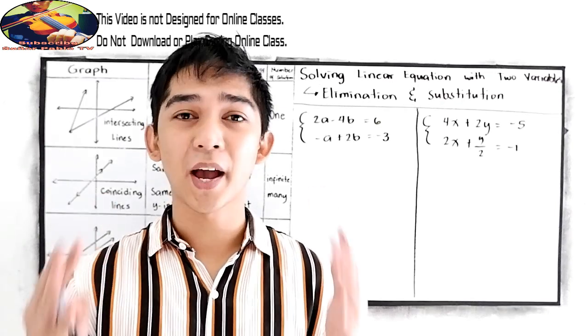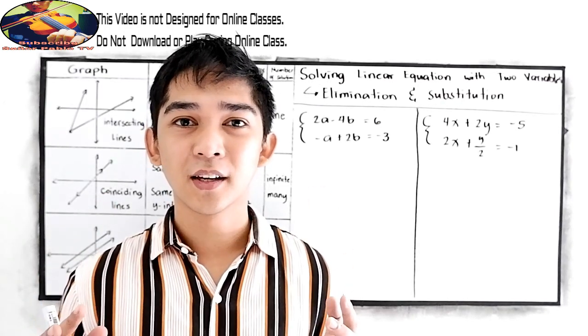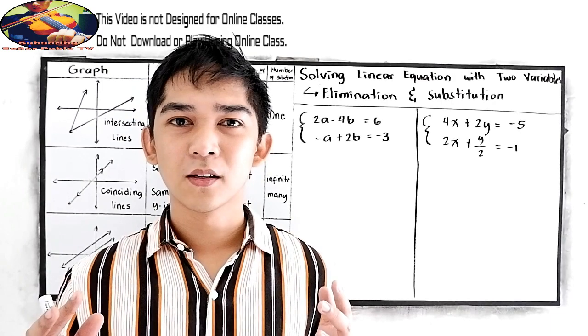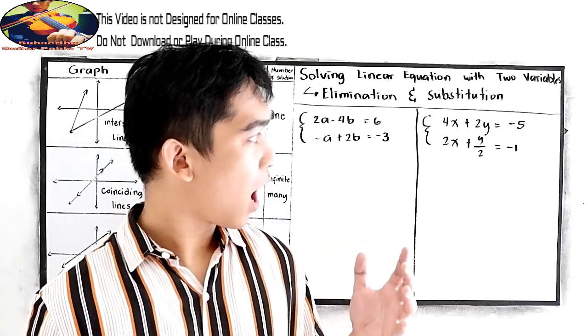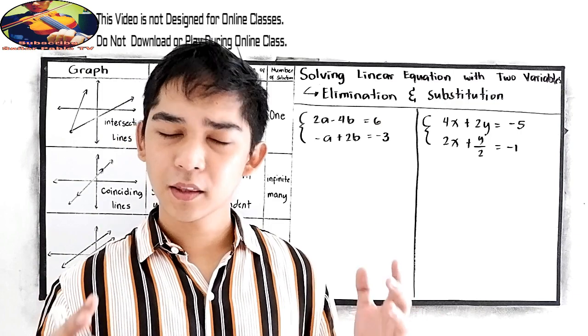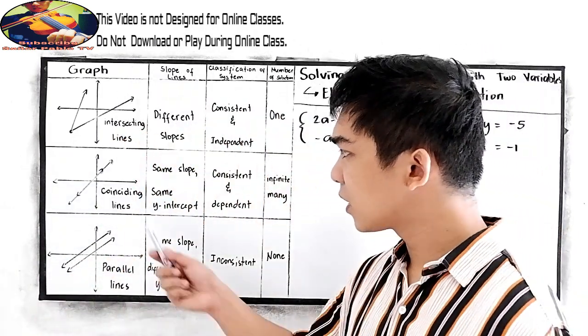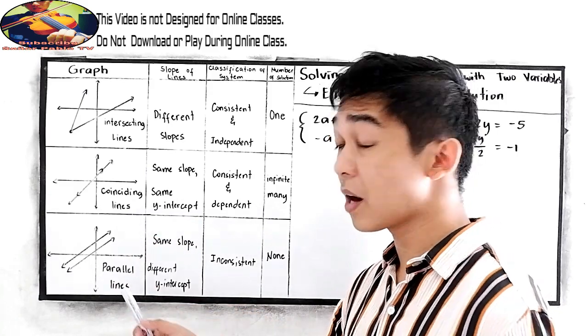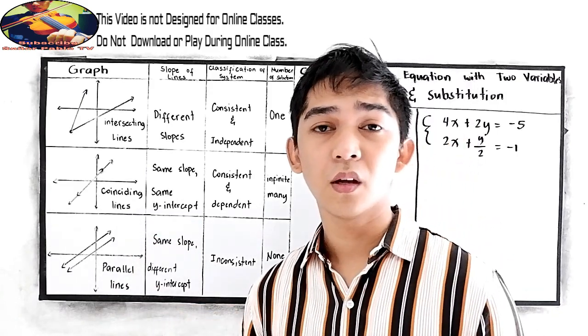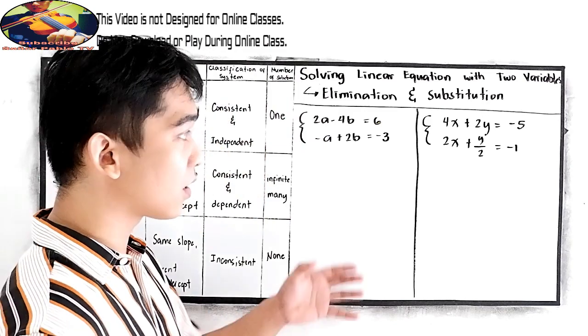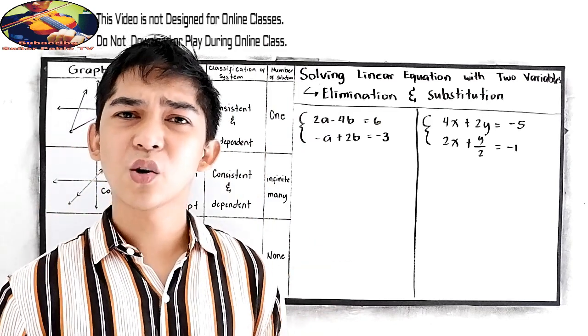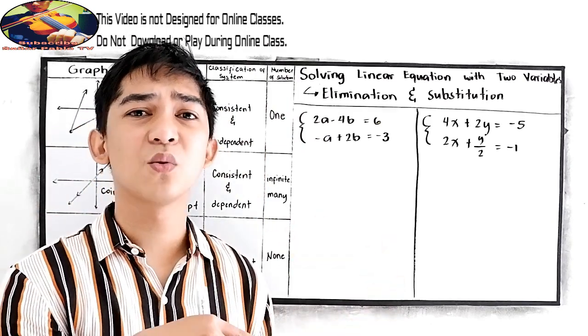we will be discussing the system of linear equations with two variables using substitution or elimination. But put in mind, we're going to find the value for our x and y but notice the given that we will come up with the coinciding lines and parallel lines. So if we're going to graph that, that will give us the coinciding and parallel lines. So what will happen to our x and y?